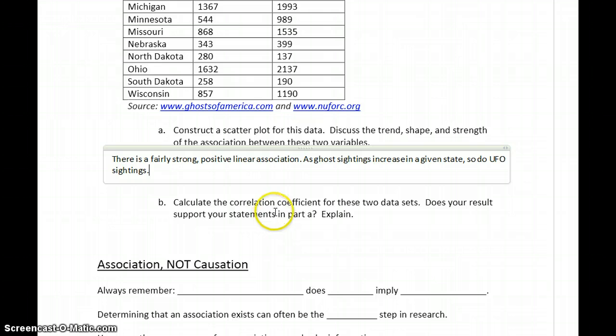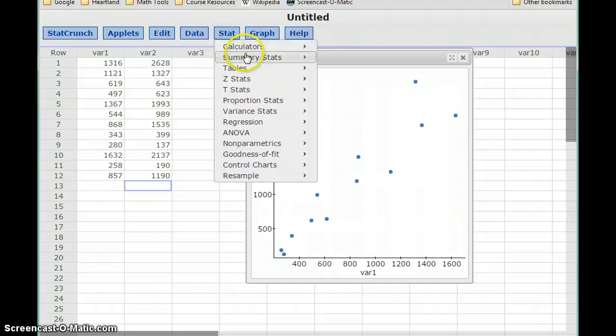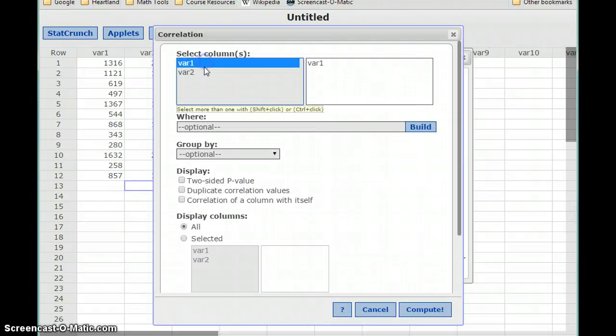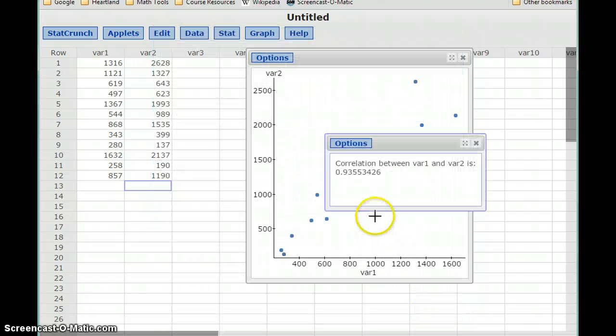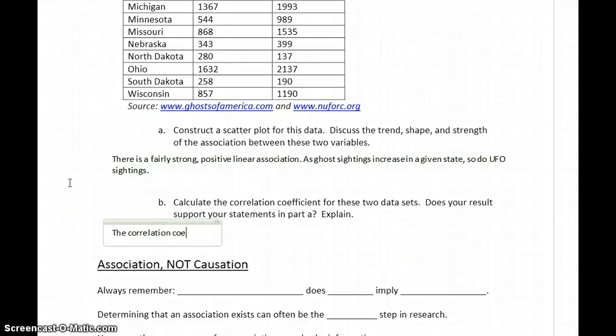So now what we want to do is calculate the correlation coefficient and check to see does that support our visual estimation of the strength of that association. So we'll select Stat, Summary Stats, and Correlation. Select our two variables and click Compute. In this case, we have an even stronger association than we did in the previous example. So the correlation coefficient is r equals 0.9355.